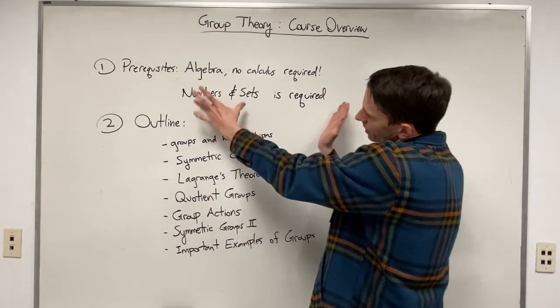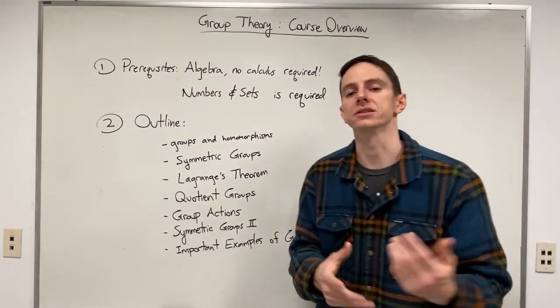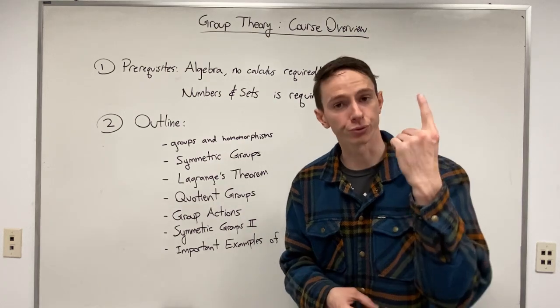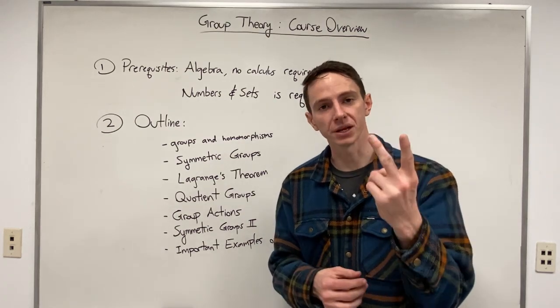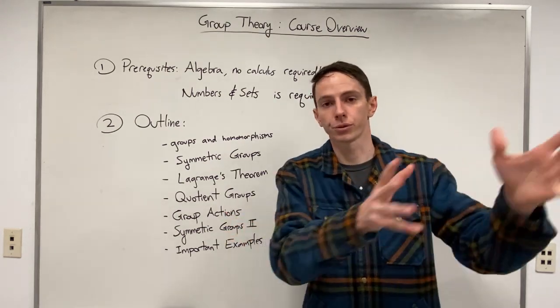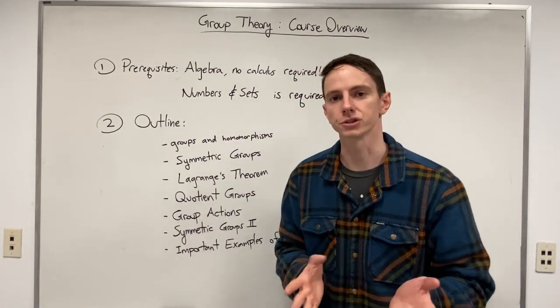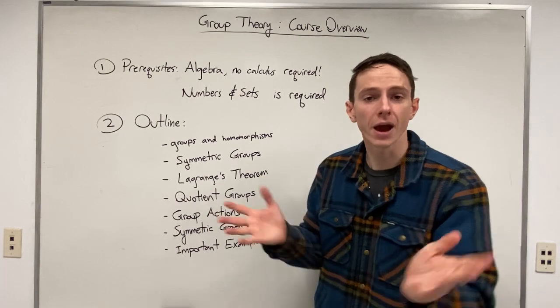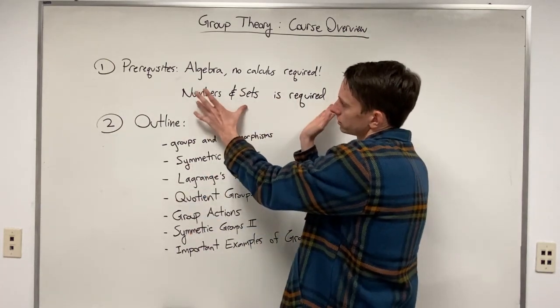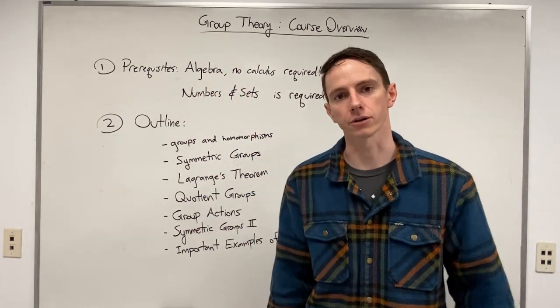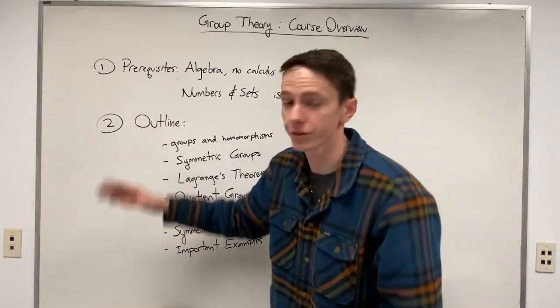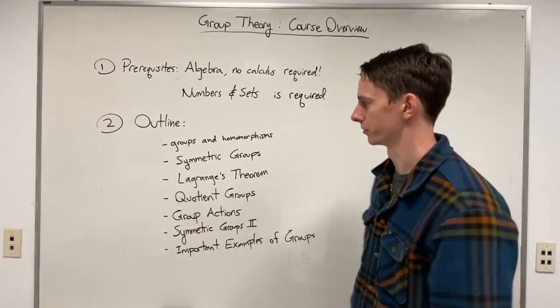So when I say that numbers and sets is required, what I really mean is that you want to make sure you know how to prove statements and you have some basic understanding of pure math notation, like how to denote an element of a set and stuff like that. But if you have that, then I would say this requirement would get checked off. Now for the course outline, what is actually going to get covered?